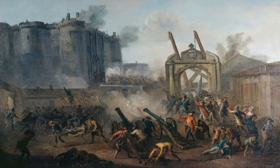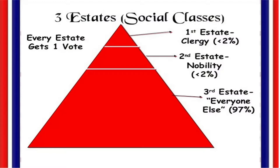Before the French Revolution, the people of France were divided into social groups called estates. The first estate included the clergy and church leaders, the second estate included the nobles, and the third estate included the commoners. Most of the people were members of the third estate, who paid most of the taxes, while the nobility lived lives of luxury and got all the high-ranking jobs.